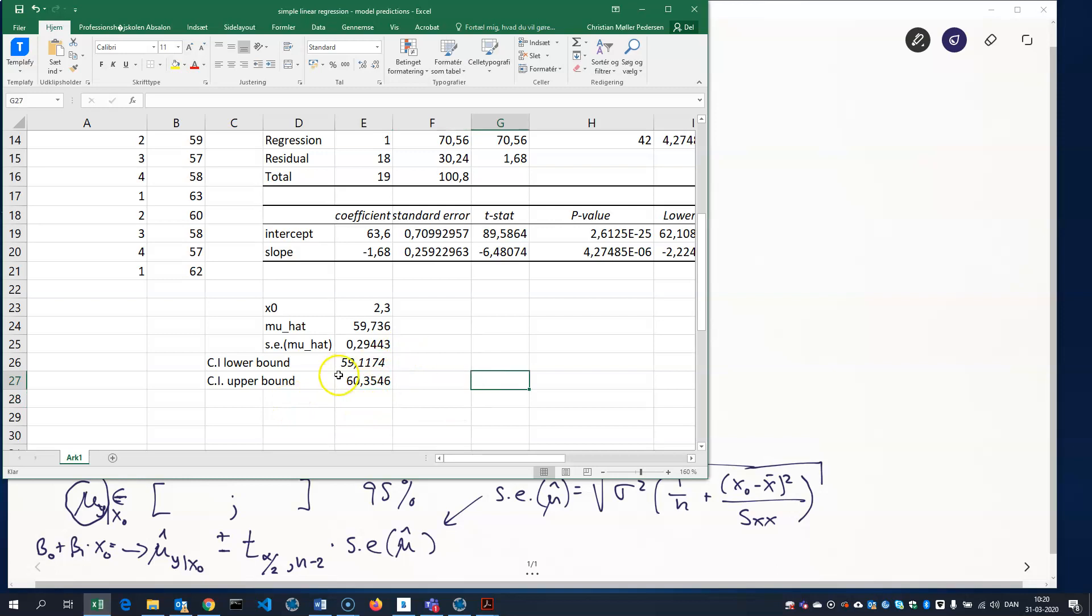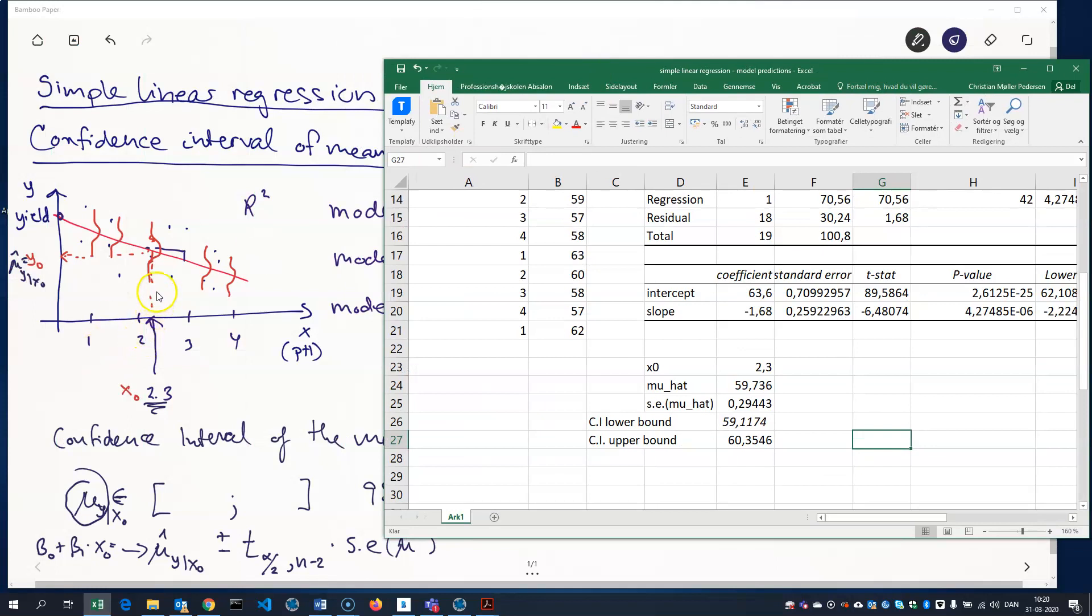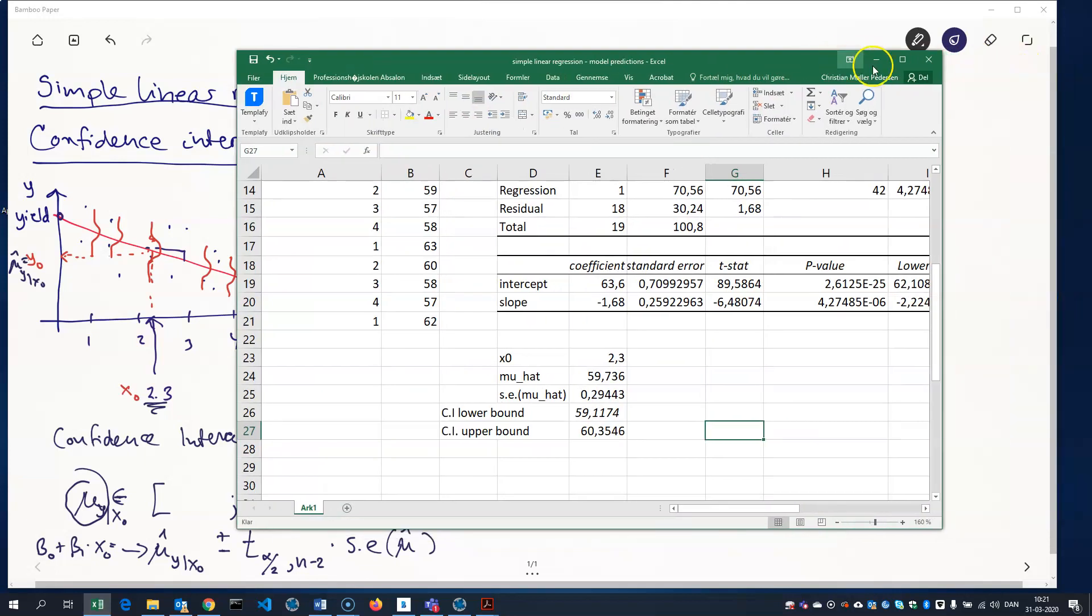So, that tells us that if I conduct the experiment a lot of times at pH level 2.3, then I will find a mean response. So, that's a mean yield, which is in this interval here with 95% confidence.